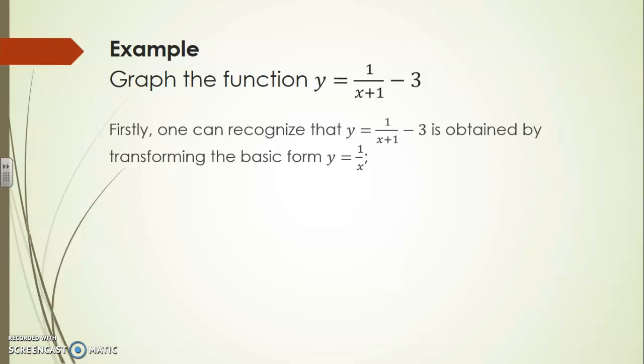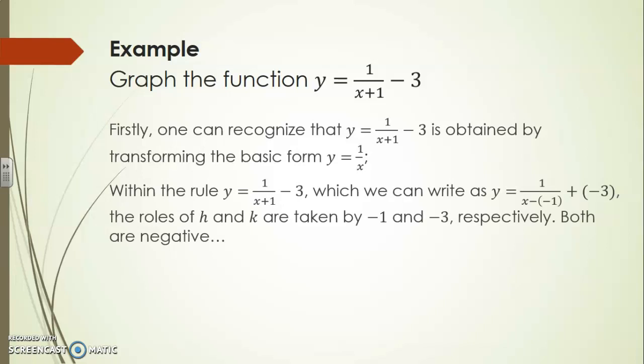The only change that took place is a 1 that was added to the x and a minus 3 added on the side. So within the rule y equals 1 over x plus 1 minus 3 which we could also write as 1 over x minus minus 1 plus minus 3, the roles of h and k are taken by minus 1 and minus 3 respectively. This time both are negative.